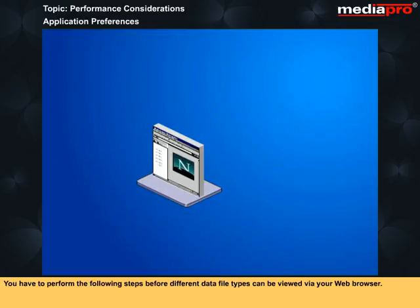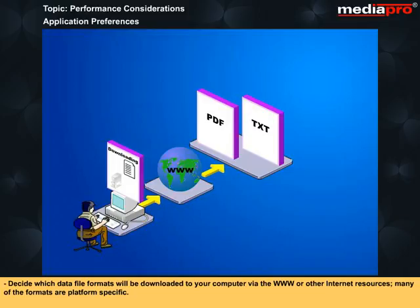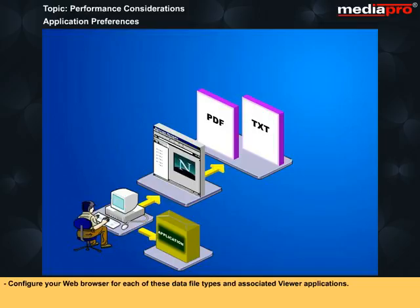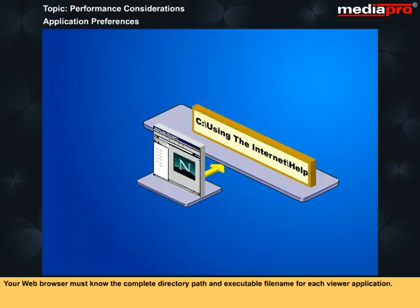You have to perform the following steps before different data file types can be viewed via your web browser. First, decide which data file formats will be downloaded to your computer via the web or other internet resources — many of the formats are platform specific. Then acquire and install the applications capable of viewing those data file types; you may already have many of these applications on your computer. Finally, configure your web browser for each of these data file types and associated viewer applications. Your web browser must know the complete directory path and executable filename for each viewer application.